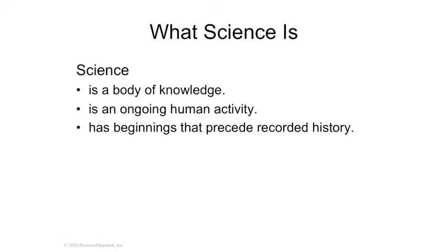Scientia is Latin for 'to know something' — it's the word for knowledge. So if you know something about the world, then you have learned science. It's essentially the body of knowledge that everybody in the world accepts about a certain thing.